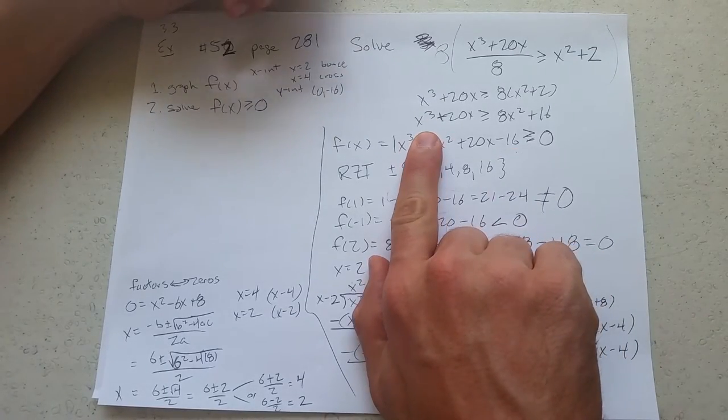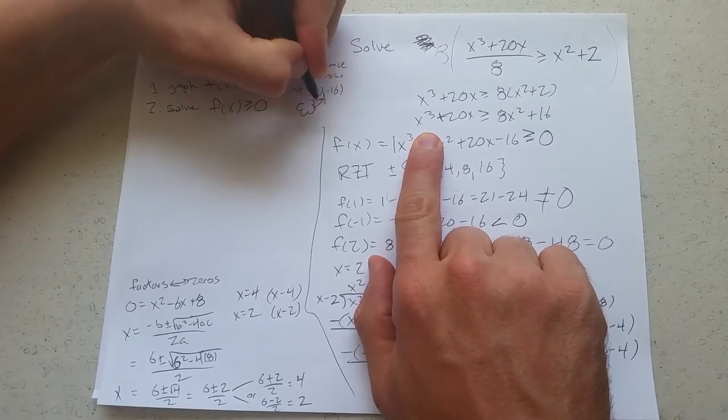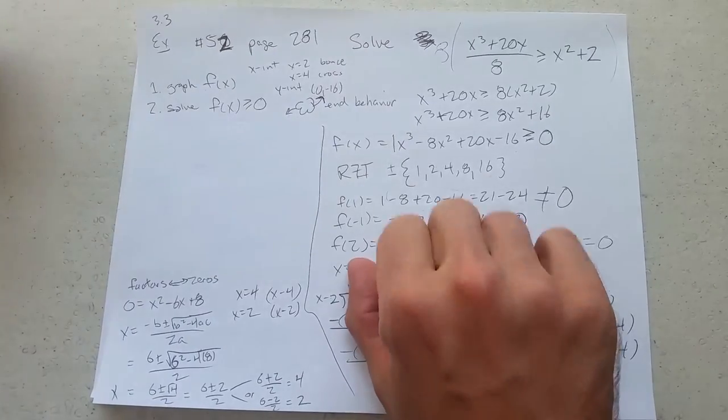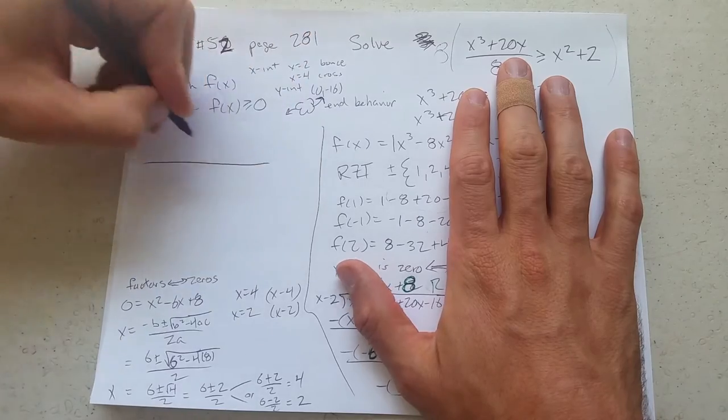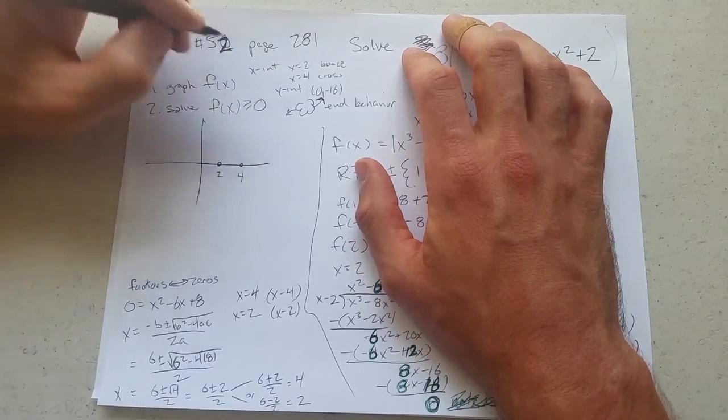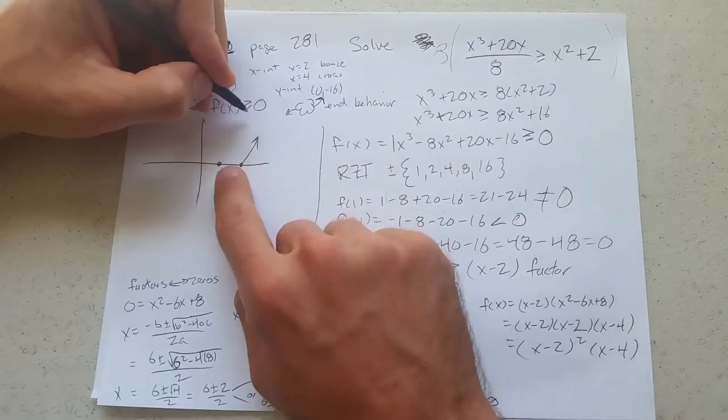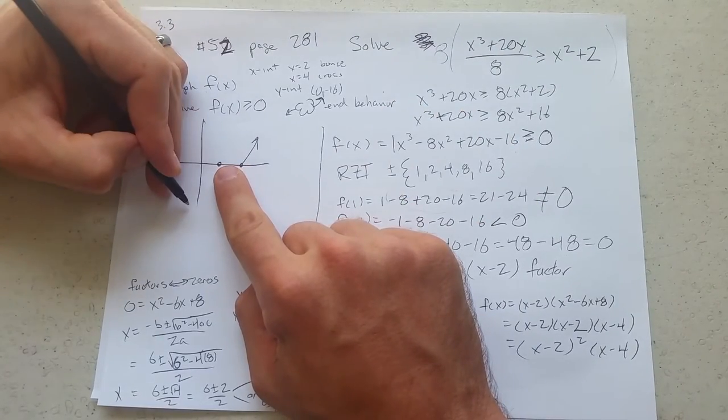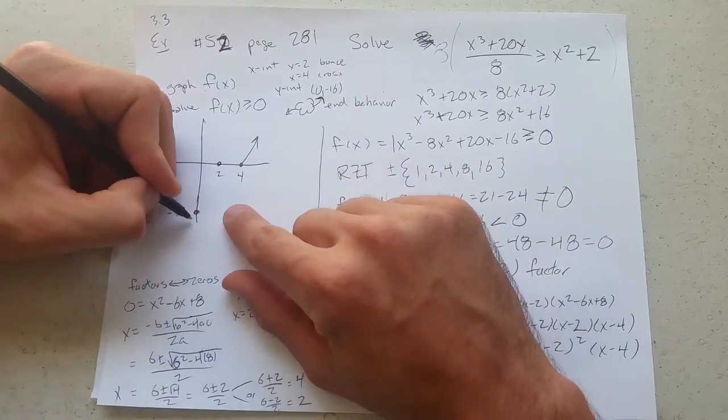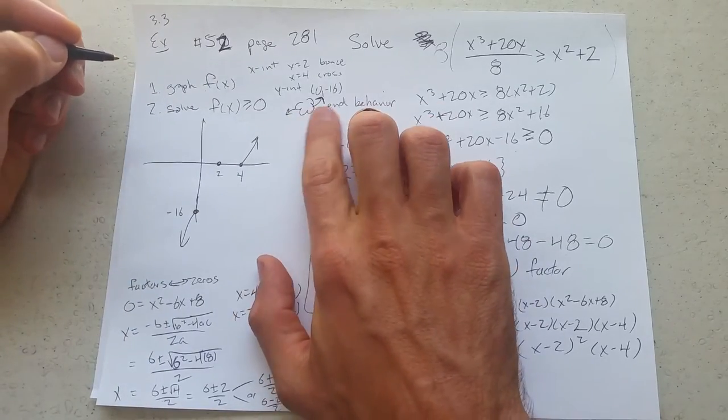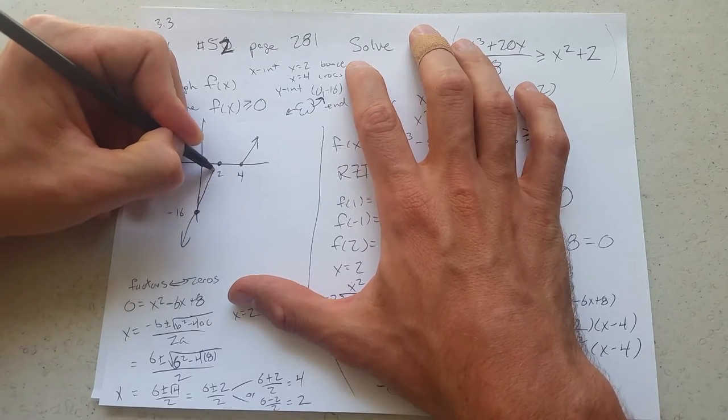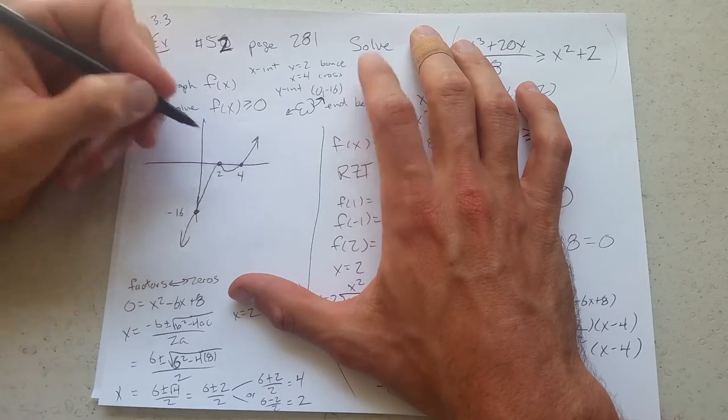End behavior, you only have to look here, odd positive. So we had odd positive, this is our end behavior. Now we're ready to graph. 2, and 4, end behavior. Now, you want to be careful. It's very tempting to go down here, which we will do, but really our last point is minus 16. This is not to scale. So from here, we're going to go down. That works our end behavior. Right here, we just got to cross and bounce to the right spot. 2 is a bounce. Better be crossing at 4, and it is.